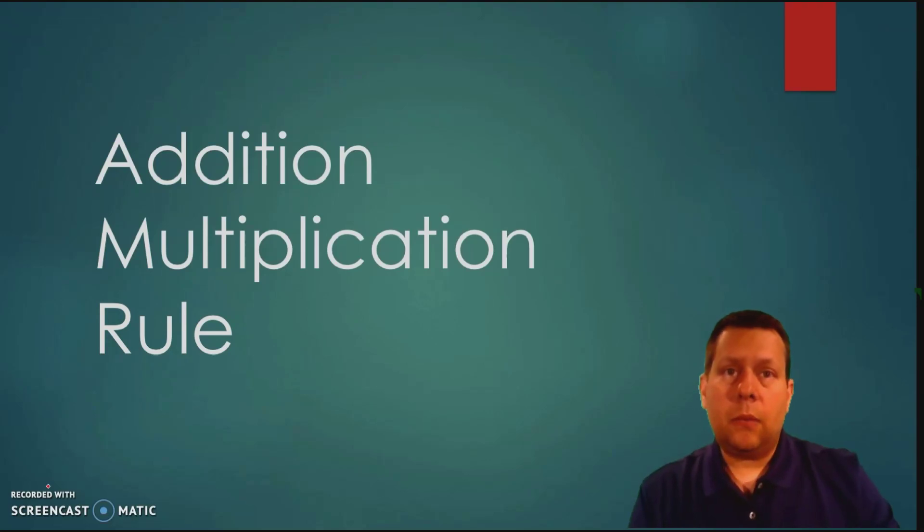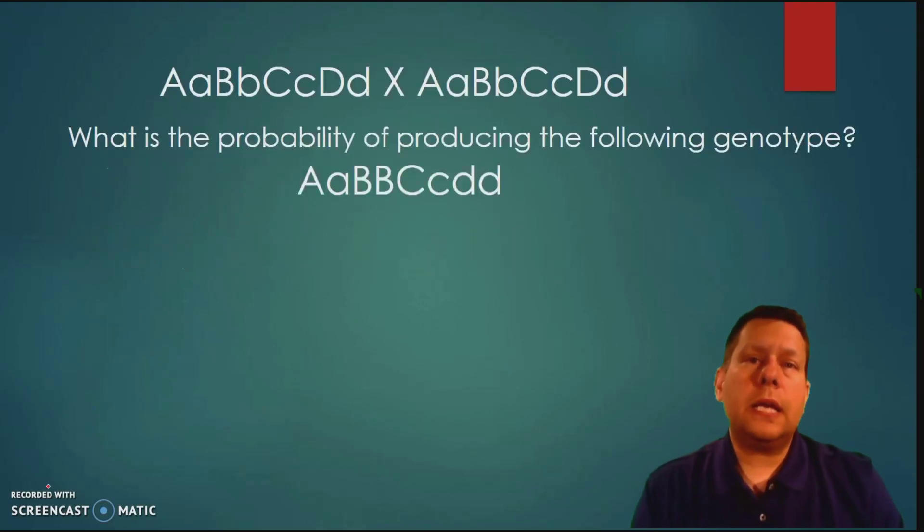So let's take a look at what one of these questions might look like. Here you can see two parents and we have four traits at one time and you're asked to figure out what is the probability of producing the genotype of the offspring which you can see listed right down here.